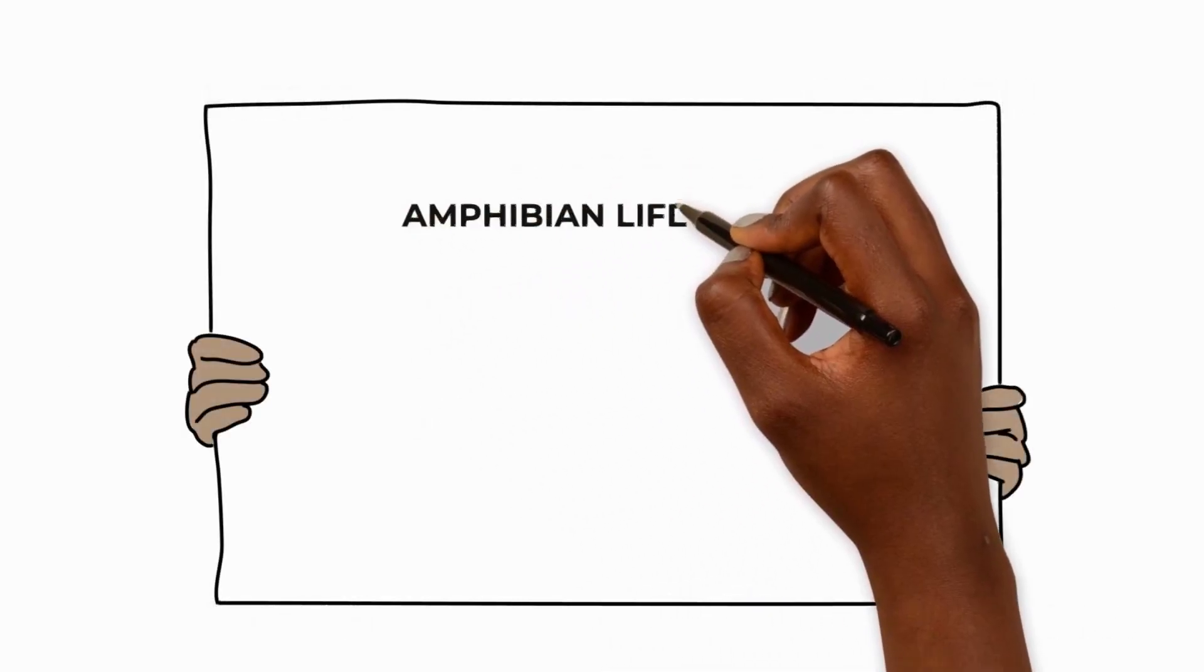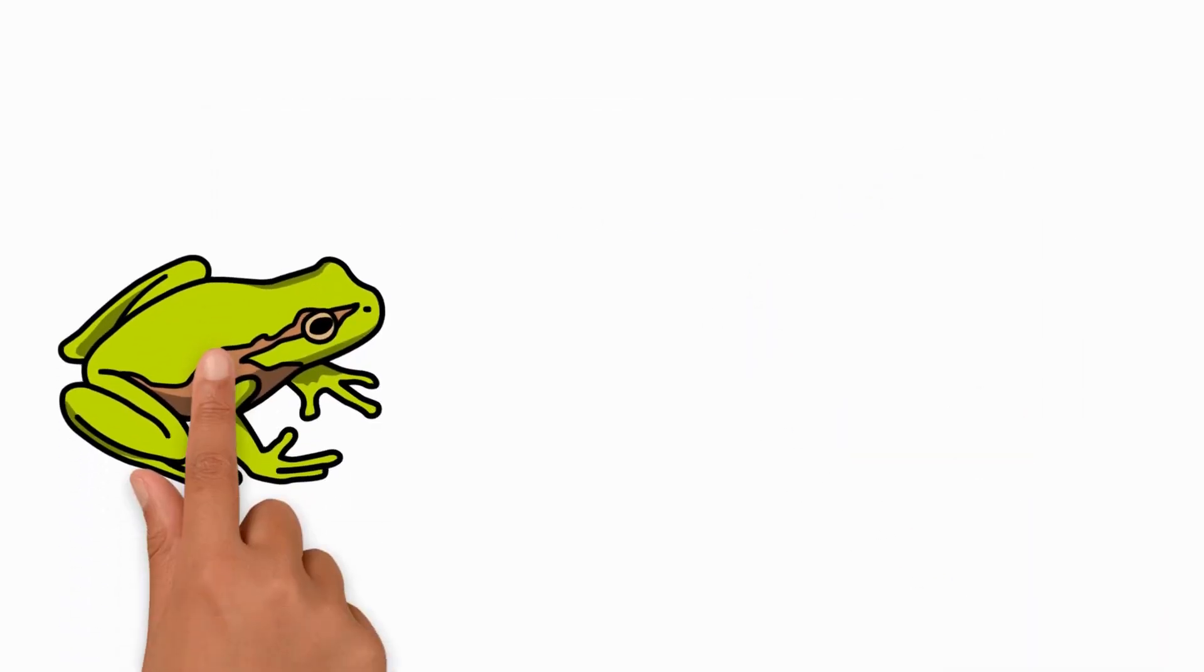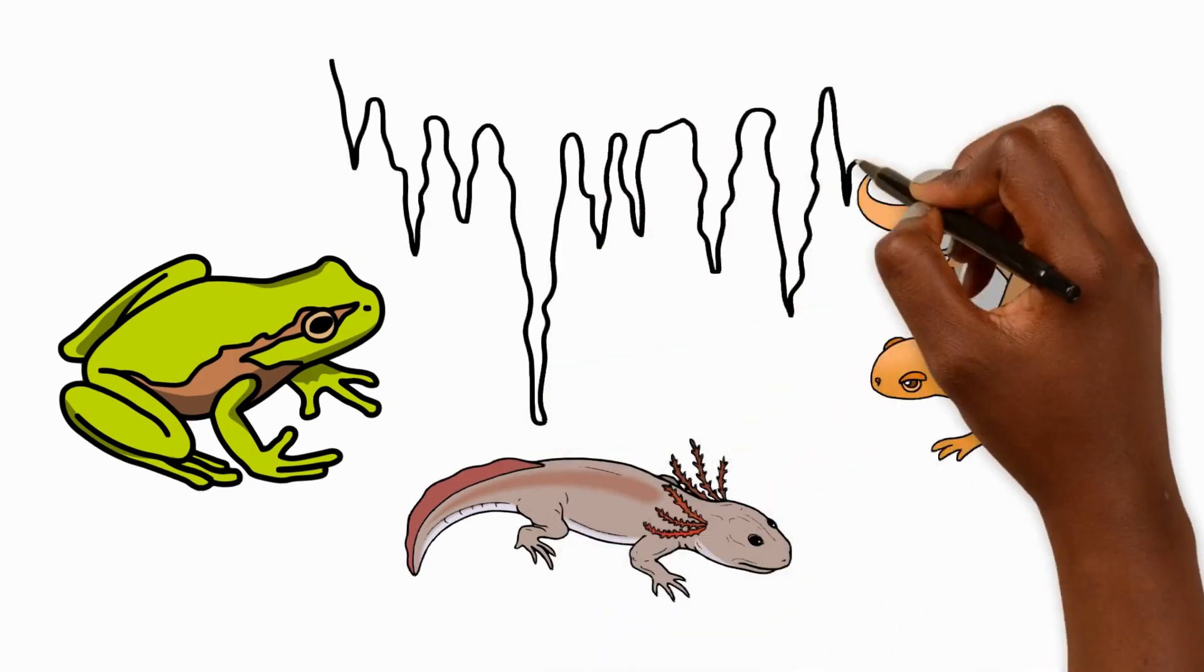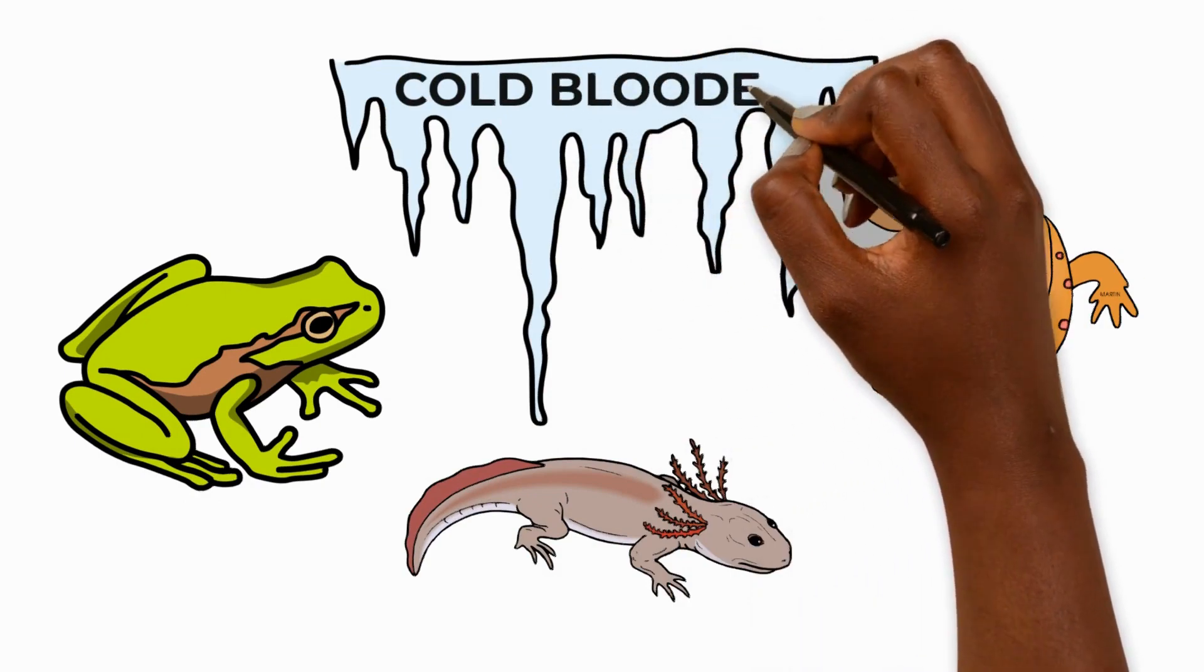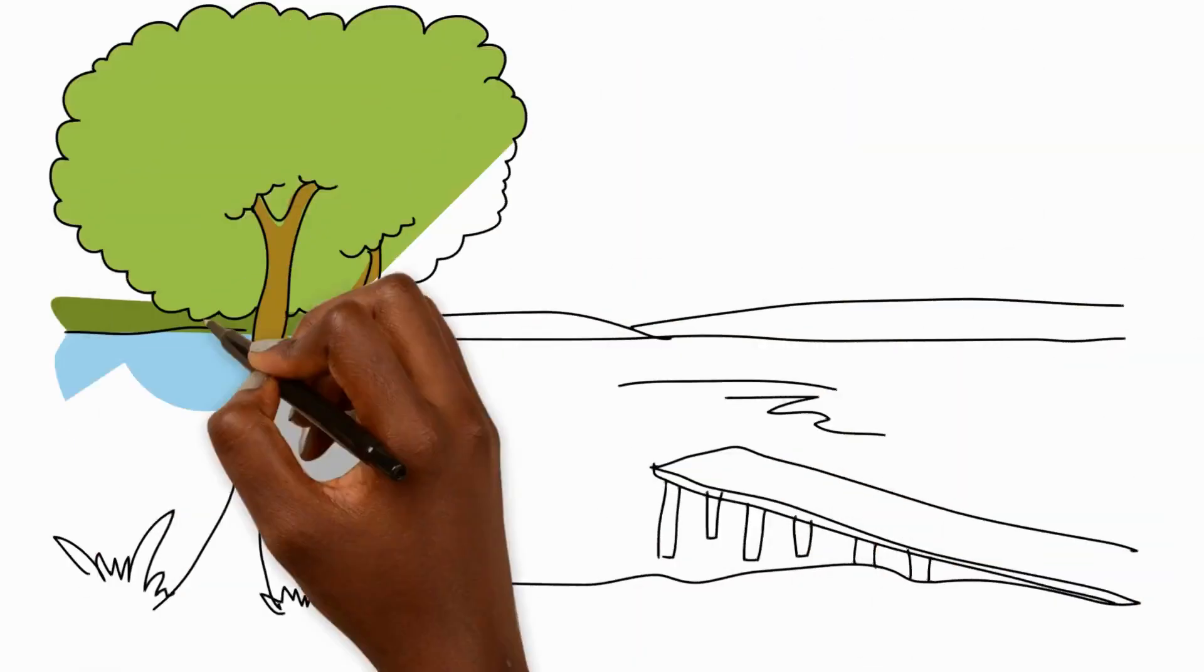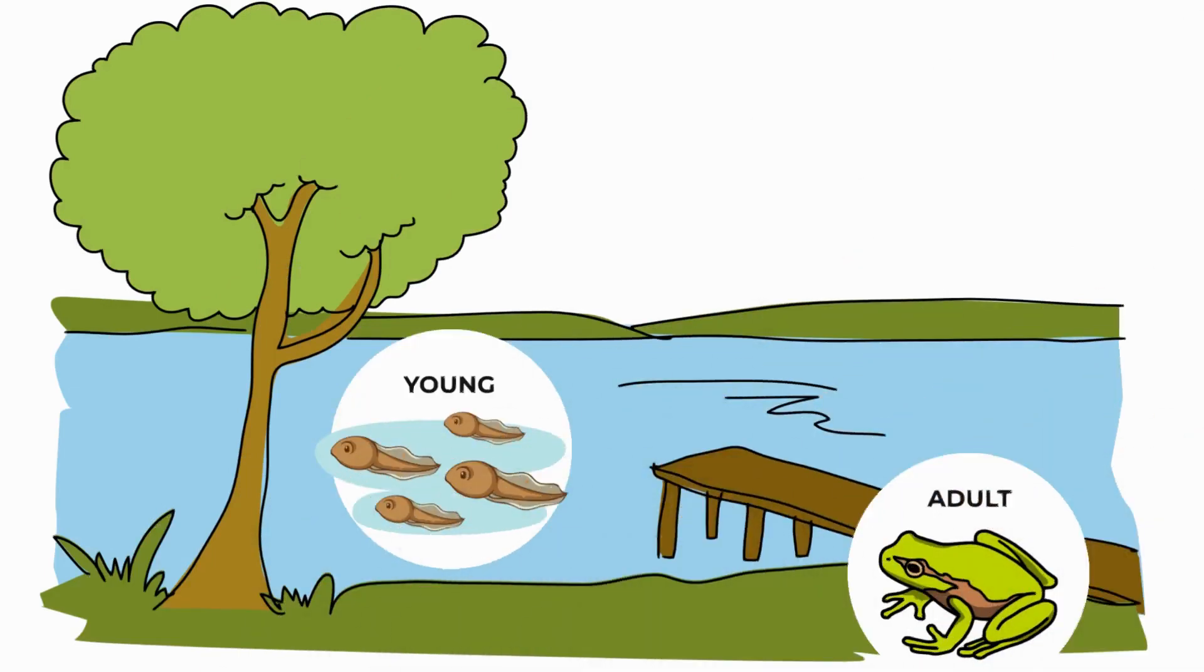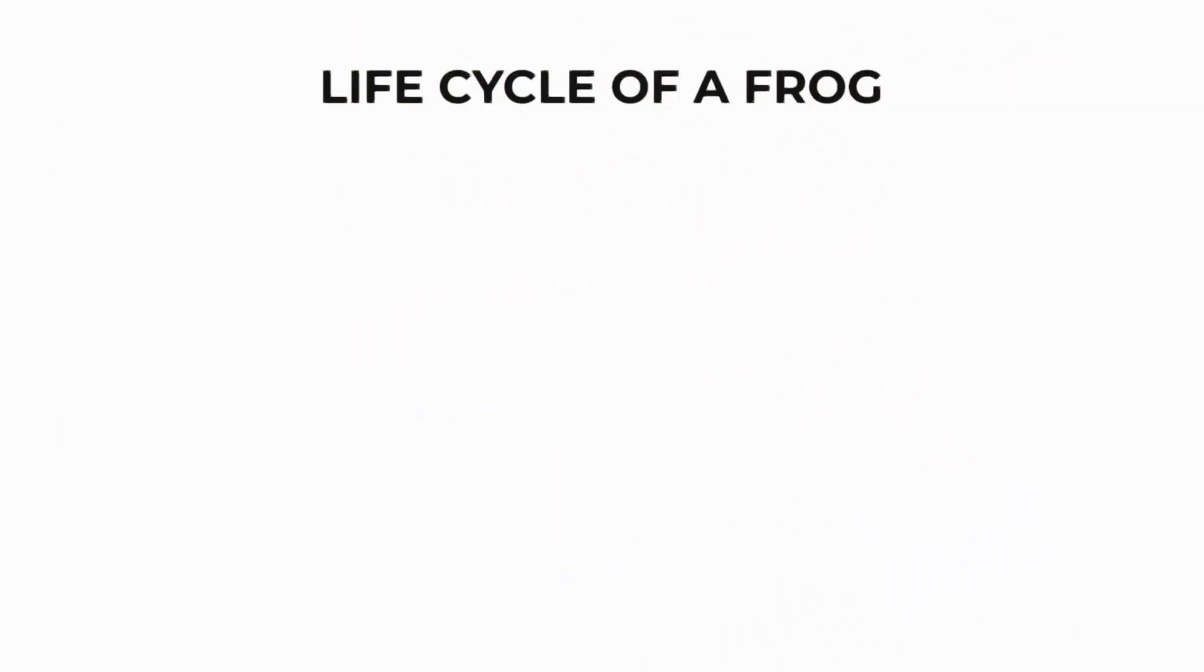Next let's move on to the amphibian life cycle. Did you know that frogs, axolotls and newts are all amphibians? These animals are cold-blooded which means they change their body temperature according to their surroundings. And did you know that they spend their adult life on land but are born and develop in water? Let's take a closer look at the life cycle of a frog as an example.